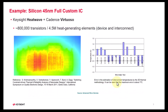Here is an example of simulating a silicon 45 nanometer full custom IC, where Keysight HeatWave and Cadence Virtuoso is used. The design consisted of 800,000 transistors, which had 4.5 million heat generating elements, which includes devices and interconnects. Keysight HeatWave simulator was able to simulate it very comfortably in a reasonable amount of time, and in terms of accuracy, it is only about 1 degree centigrade or lower as measured versus simulated comparison is drawn.